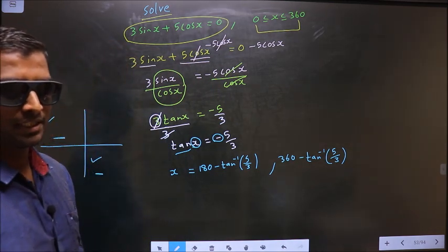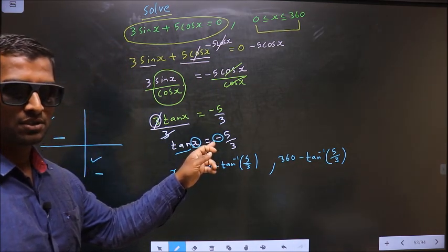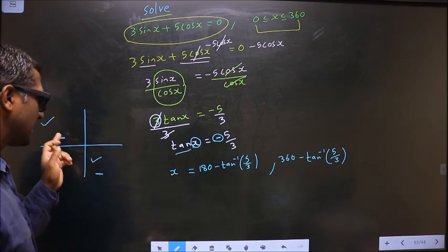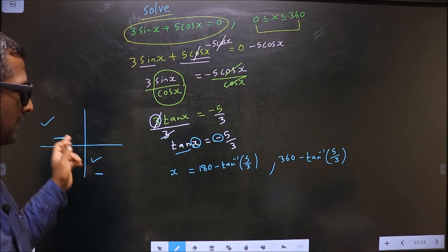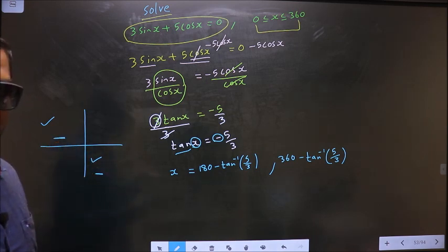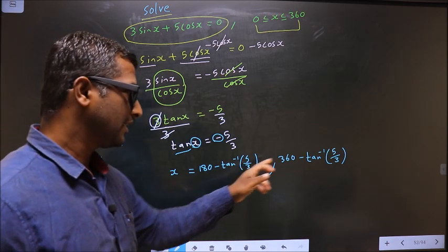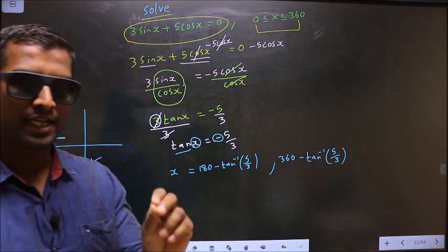Now, remember this. The negative sign is used only for selecting the quadrants. Once quadrants have been selected, do not place negative sign again here. Remember that.